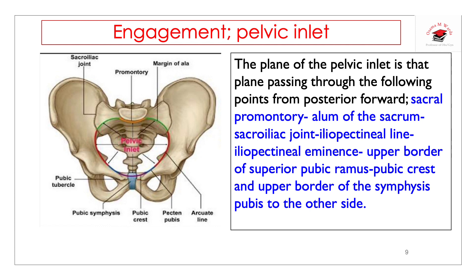The plane of the pelvic inlet is where the widest transverse diameter of the presenting part must pass for engagement to occur. This plane passes through the following points from posterior forward: the sacral promontory, the sacroiliac joint, the iliopectineal line, the iliopectineal eminence, the upper border of the pubic ramus, the pubic crest, and the upper border of the symphysis pubis on the other side.